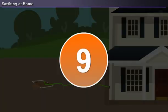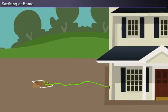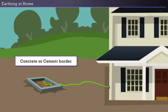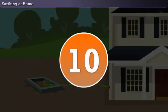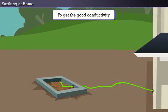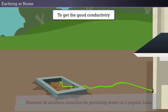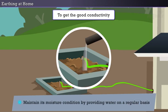Step 9: Now, it's time to construct a concrete or cement border around the pit. Step 10: In order to get good conductivity from the earth pit, we have to maintain its moisture condition by providing water on a regular basis.